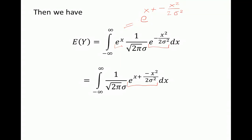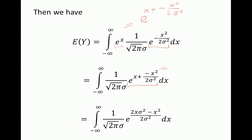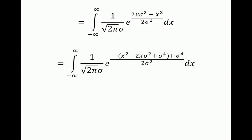That is how we get this term. Now let's bring the exponent to have the same denominator: 2 times sigma squared times x over 2 sigma squared, plus minus x squared over 2 sigma squared. Let's rearrange the terms and take out the minus sign, giving us minus x squared minus 2x sigma squared, all over 2 sigma squared.